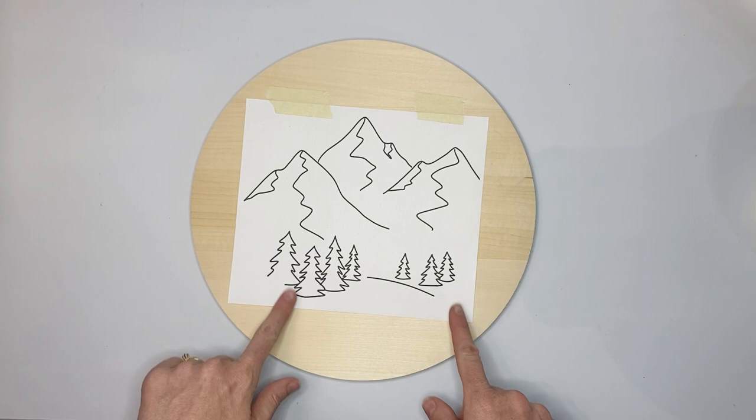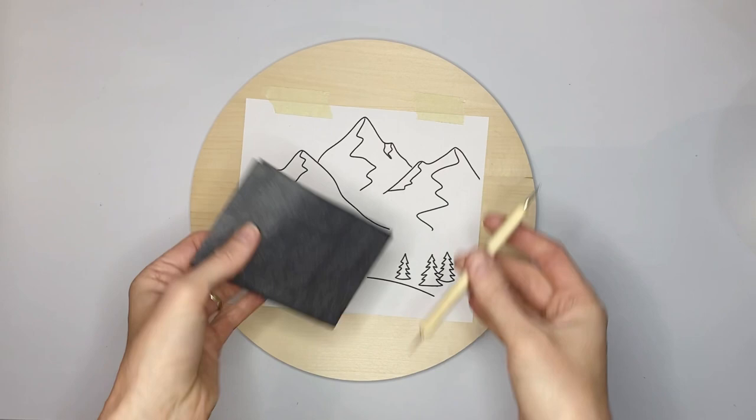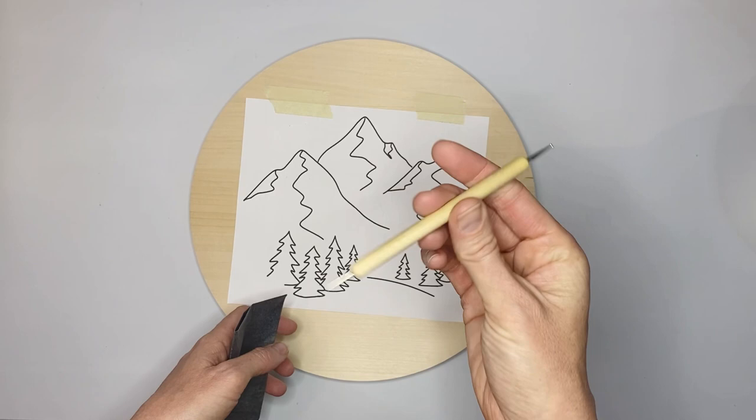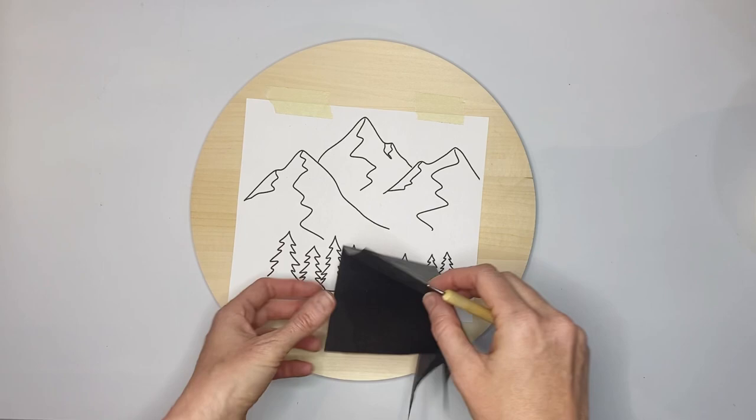Now it's time to transfer the pattern and you're going to want to use your carbon paper and your tracing tool or your pen or pencil, whatever you're using. And by the way, these are in the wood burning tools and accessories kit. So if you got this but you didn't order this, this is a really great tool. The wood burning tools and accessories kit has a whole bunch of awesome little tools that I use all the time.